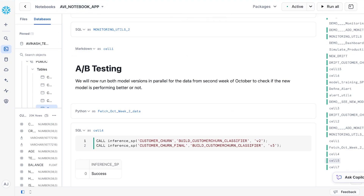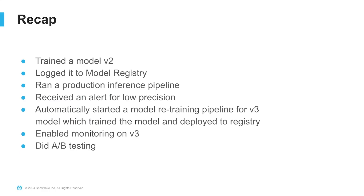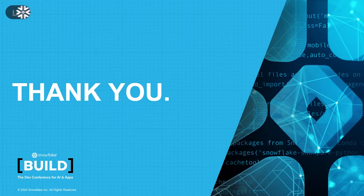Thank you, that's the demo. To quickly recap: we first trained model version v2 using the Snowflake ML Python package in notebooks, logged it to model registry, ran a production inference pipeline, received an alert due to low precision, automatically started a retraining pipeline producing model v3 which was trained and deployed to the registry, enabled monitoring on v3, and did an A/B test on both. This represents a complete lifecycle of a model and how you can use the MLOps capabilities of Snowflake to uplevel your data science practices and the way you productionize your models. Thank you.